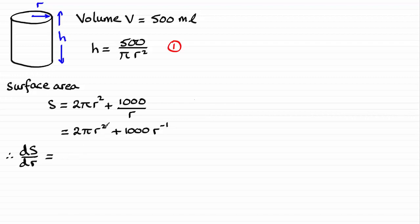then this is going to be the differential of r squared is 2r, multiply it with the constant 2pi and you end up with 4pi r. And then for this term here, minus 1 times the 1000 gives us negative 1000, reduce the power on r by 1 and that's r to the power minus 2.